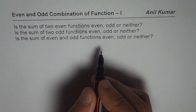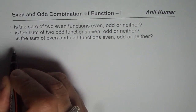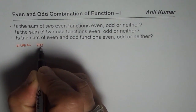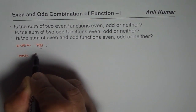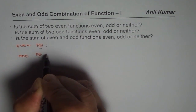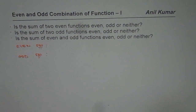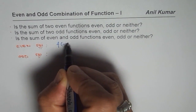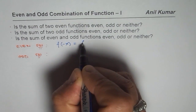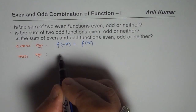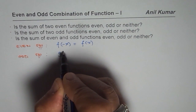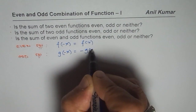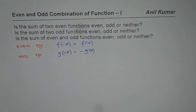Before beginning discussion on this, let us understand what an even function and an odd function are. When we say even function, it means if I take a function f(x), then f(-x) equals f(x). However, if I have a function g(x) and g(-x) equals -g(x), then it is an odd function.